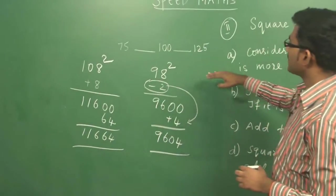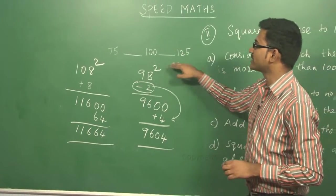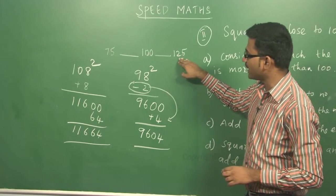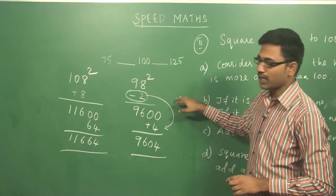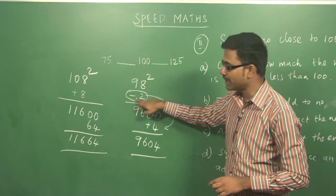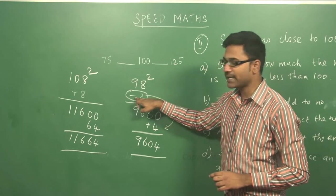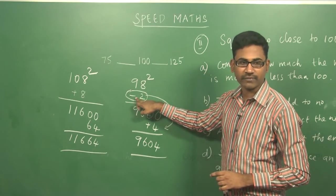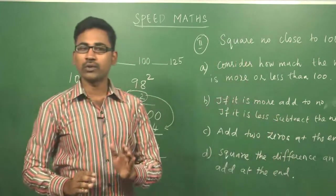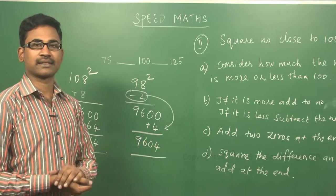The reason only numbers from 75 to 125 are used for this method is that if a number like 125 is given, the difference is plus 25, and if 75 is given, the difference is minus 25. So you need to know the square numbers from 1 to 25, which we will see in detail in the next slides.